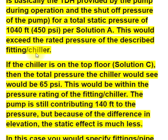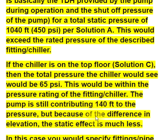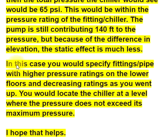If the chiller is on the top floor (solution C), the total pressure the chiller would see would be 65 psi, which would be within the pressure rating of the fitting and chiller. The pump still contributes 140 feet to the pressure, but because of the difference in elevation, the static effect is much less. In this case, you would specify fittings and pipes with higher pressure ratings on the lower floors and decreasing ratings as you go up, and locate the chiller at a level where the pressure does not exceed its maximum rating.